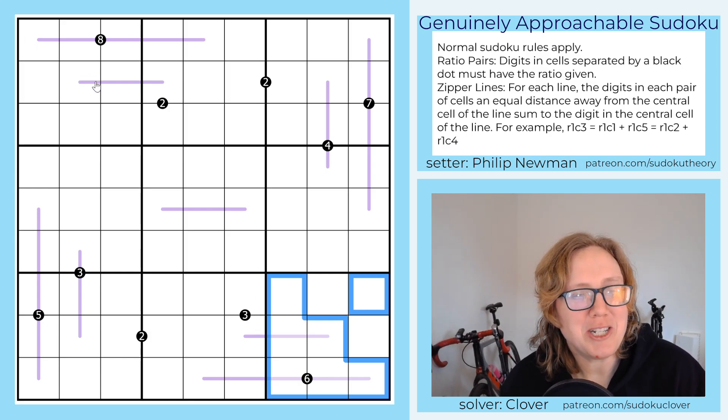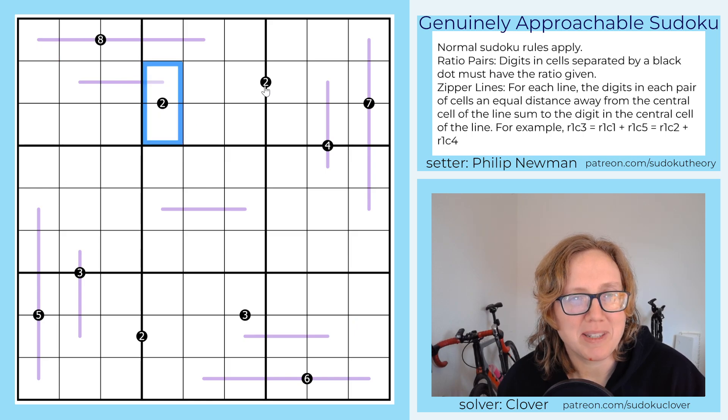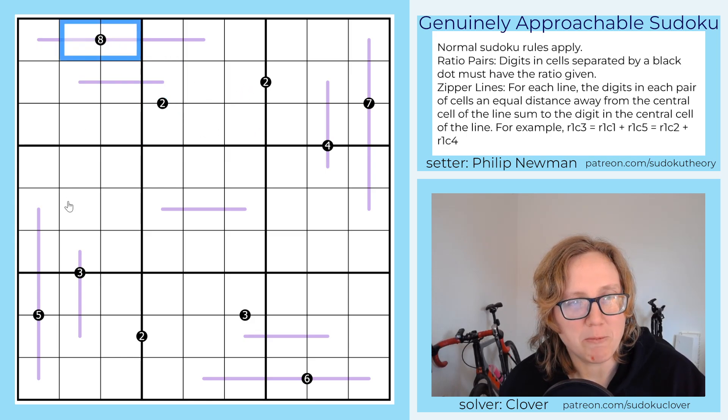And then we have ratio pairs. So we have some black circles that are marked with numbers here and the numbers tell us the ratio between the two digits on either side of the black circle. So for instance, these two cells are in a 1 to 8 ratio, these two cells are in a 1 to 3 ratio, and so on.